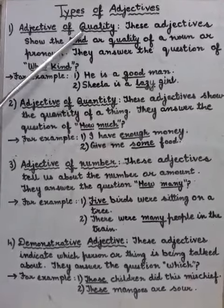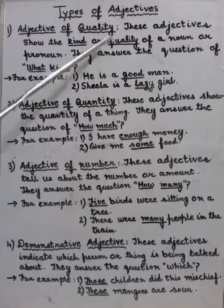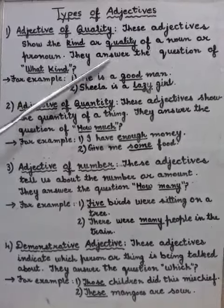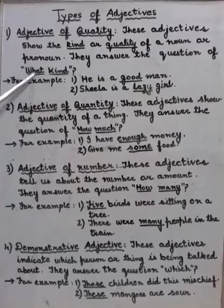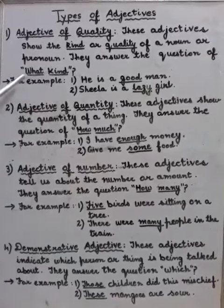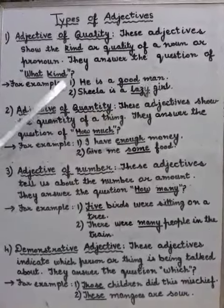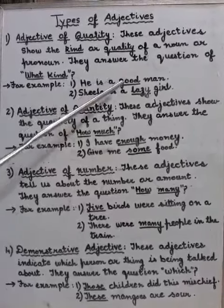Types of adjectives: 1. Adjective of quality. These adjectives show the kind or quality of a noun or pronoun. They answer the question what kind? For example, he is a good man. What kind of a man is he? Good.